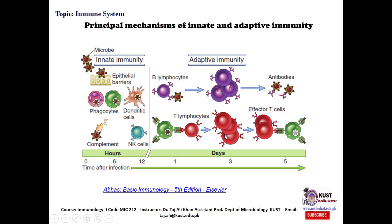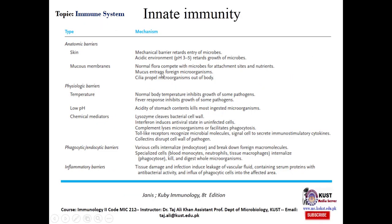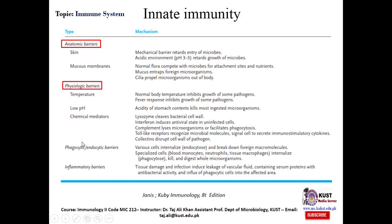The innate immunity consists of different barriers: anatomic barriers, physiological barriers, phagocytic barriers, and inflammatory barriers. All these barriers prevent infection and constitute important components of innate immunity.